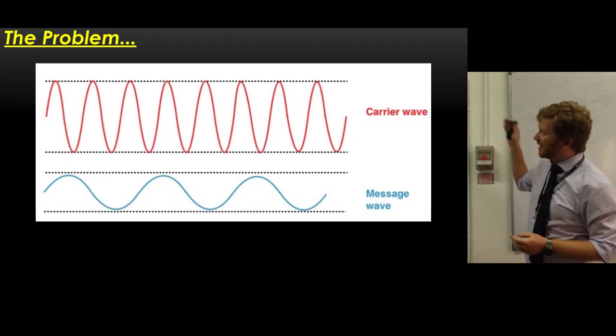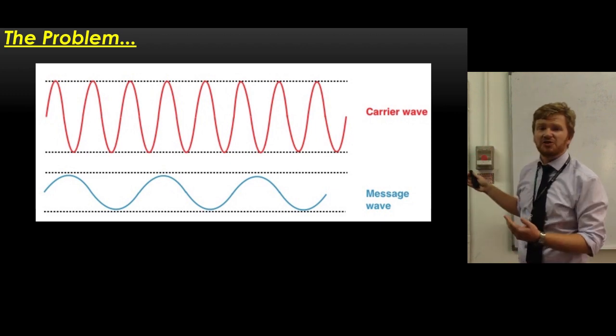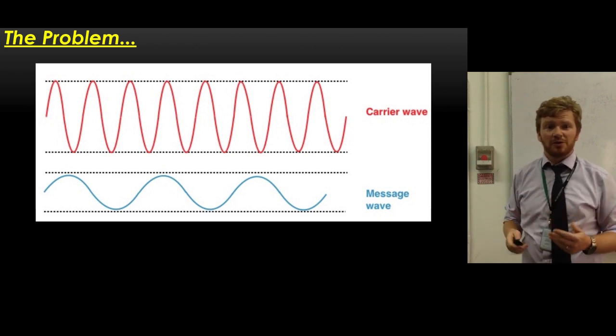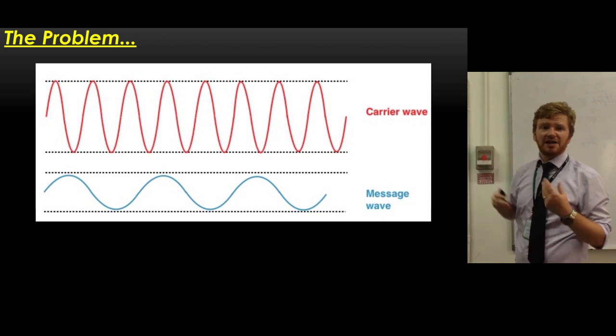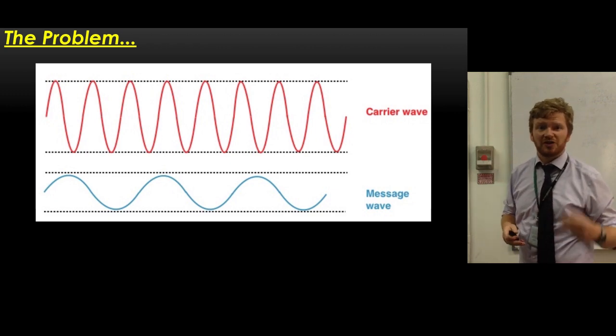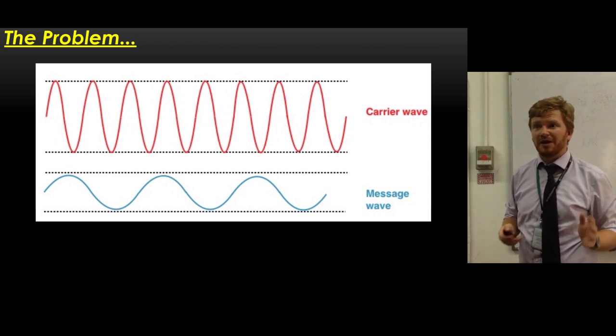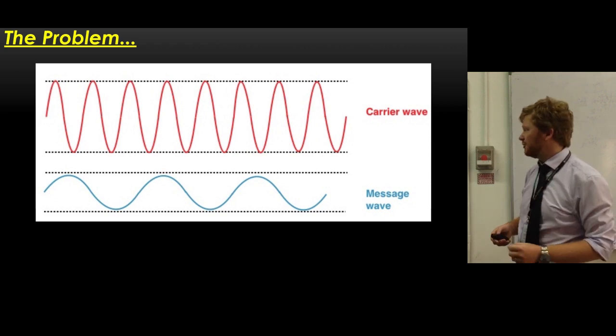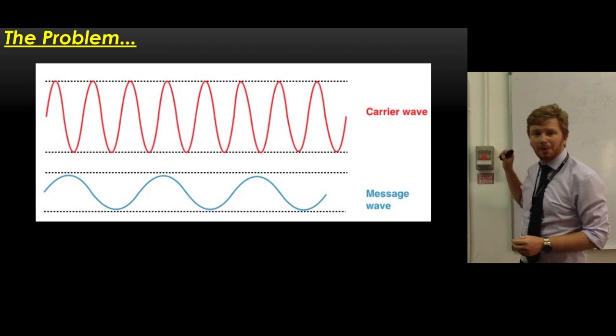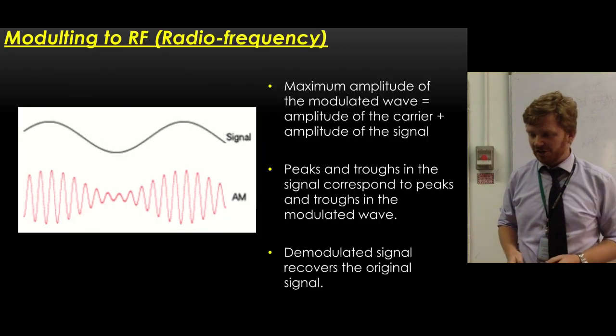The whole point of modulation is we basically need to take a carrier wave and we need to mix it with a message wave or a signal wave. You might see those two terms used interchangeably. So the carrier wave is like the EM radiation that we're actually going to use. This is the thing that's going to transmit at. So when you tune a radio, if you remember tuning your parents' cars, you set that to a certain number of megahertz or kilohertz, that's the carrier wave frequency. We need some way of combining it with the message wave frequency. And that's where modulation comes in.